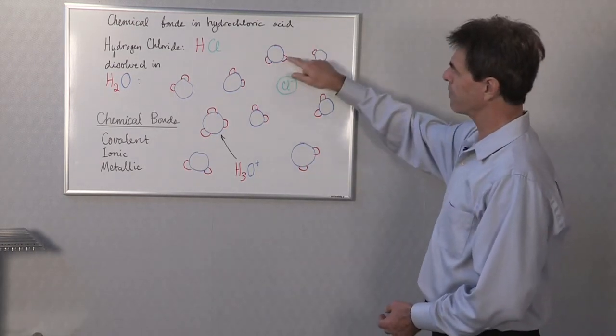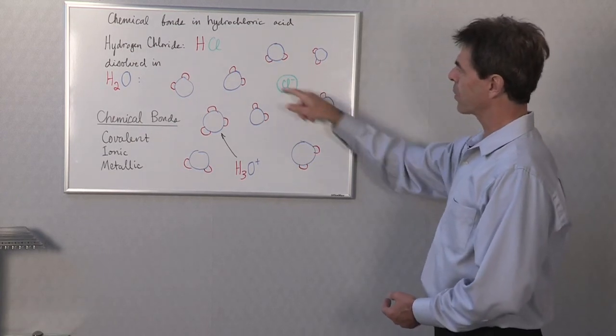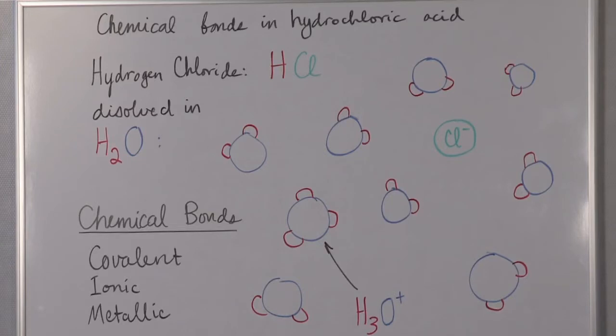So the positive part of the water molecule is attracted toward the negative chlorine atom, and the leftover proton, which attaches itself to water, attaches itself of course to the negative part of the water molecule.